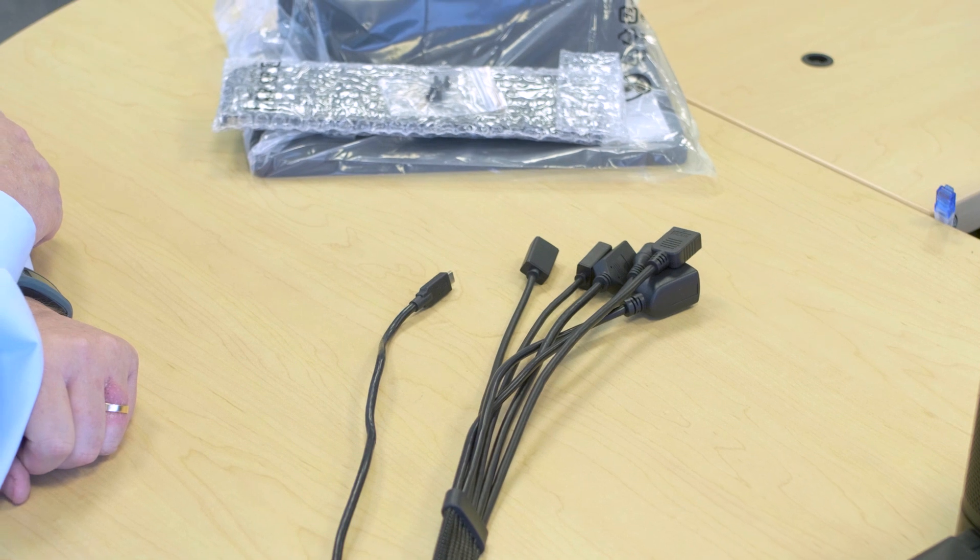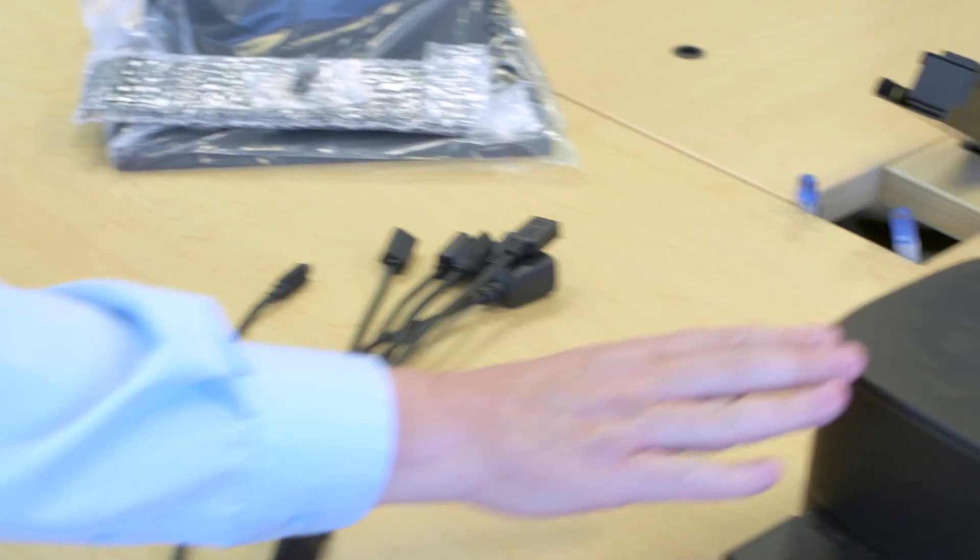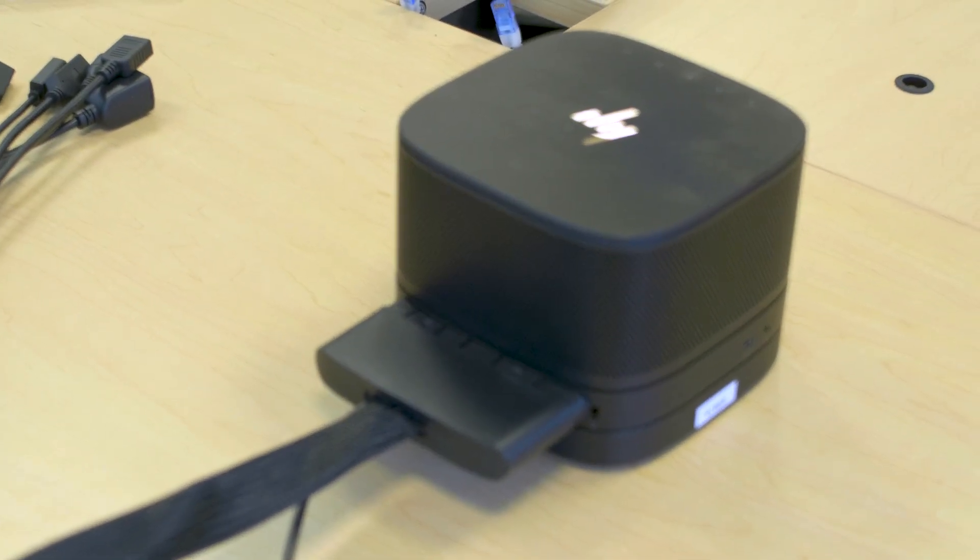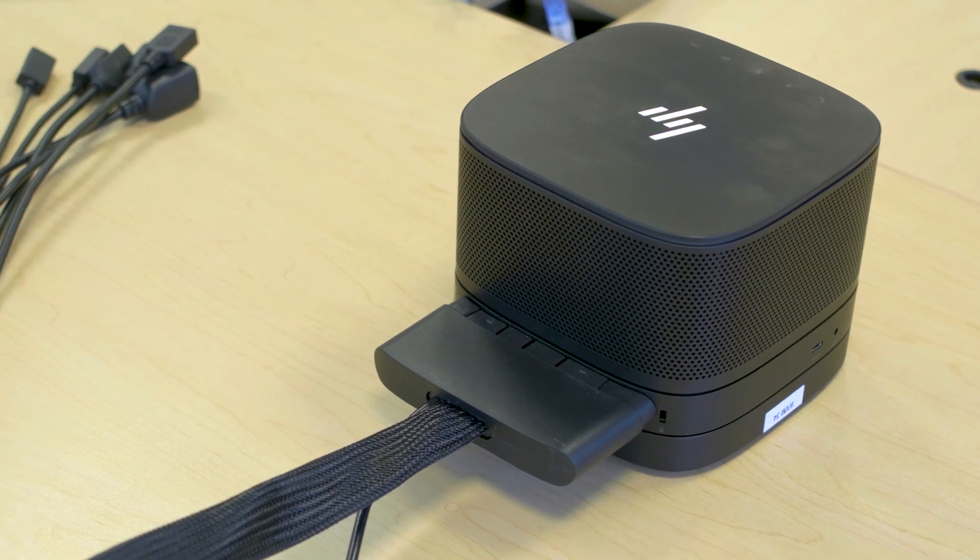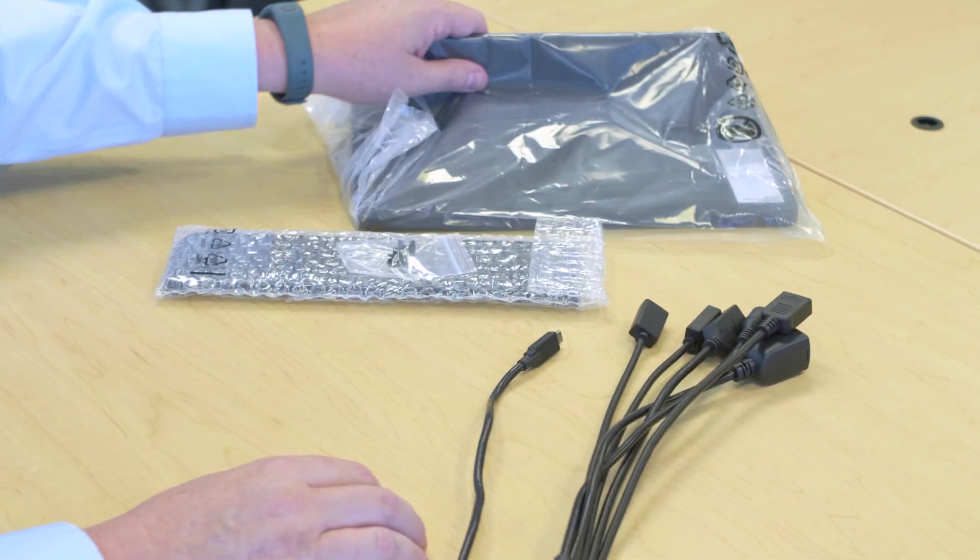First, the requirements needed: you have the Slice 2 system, number one; number two, you have the port cover installed; number three, out of the packaging, you need the center room control.